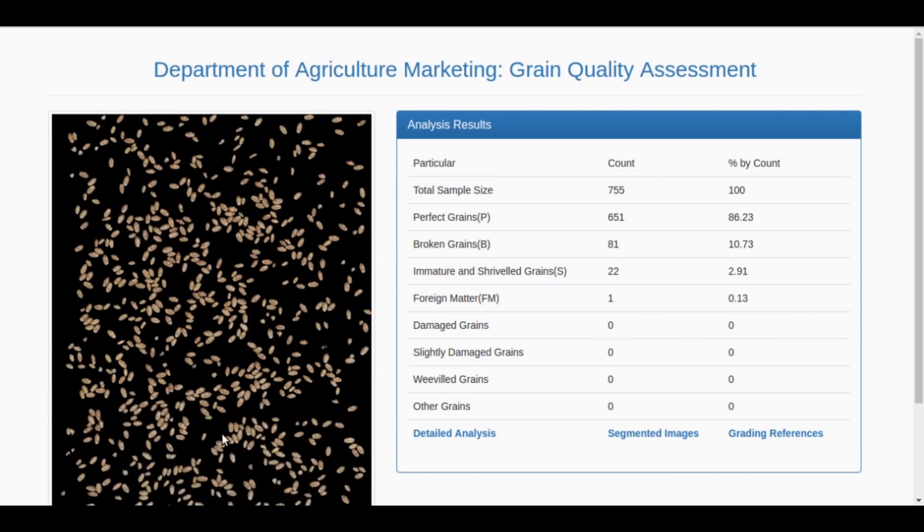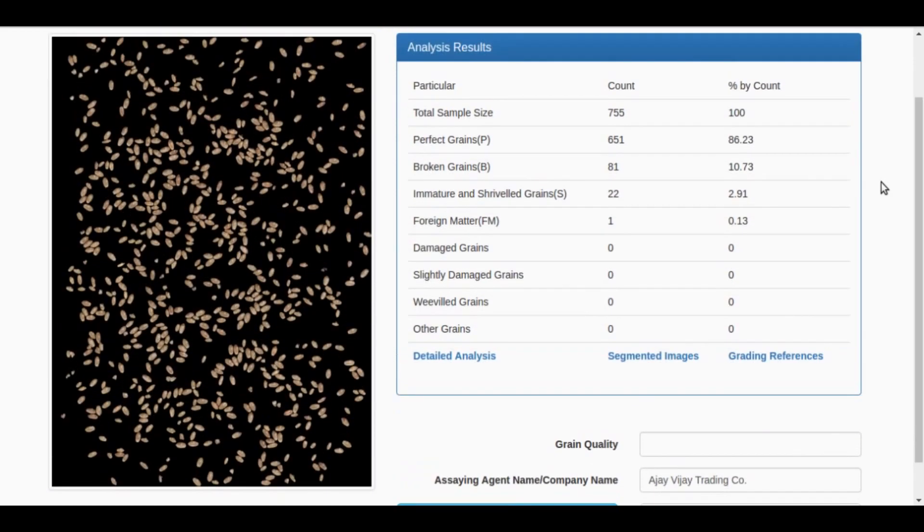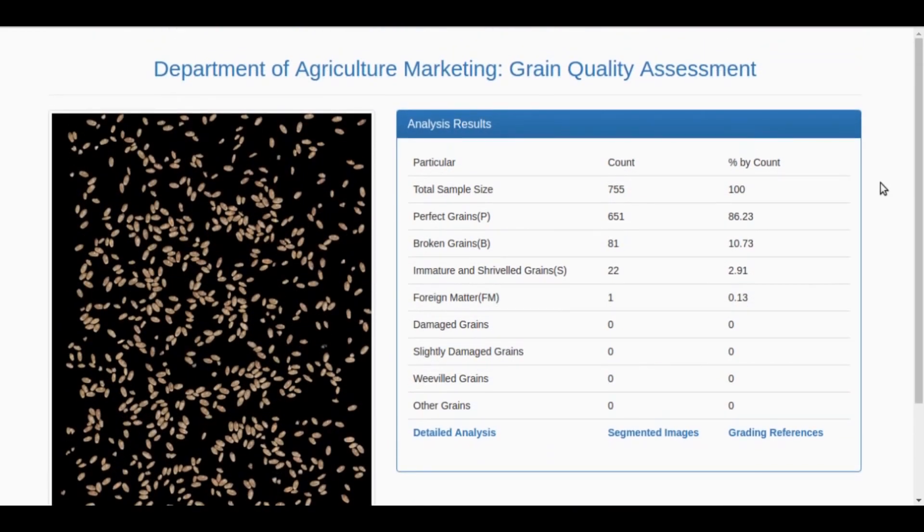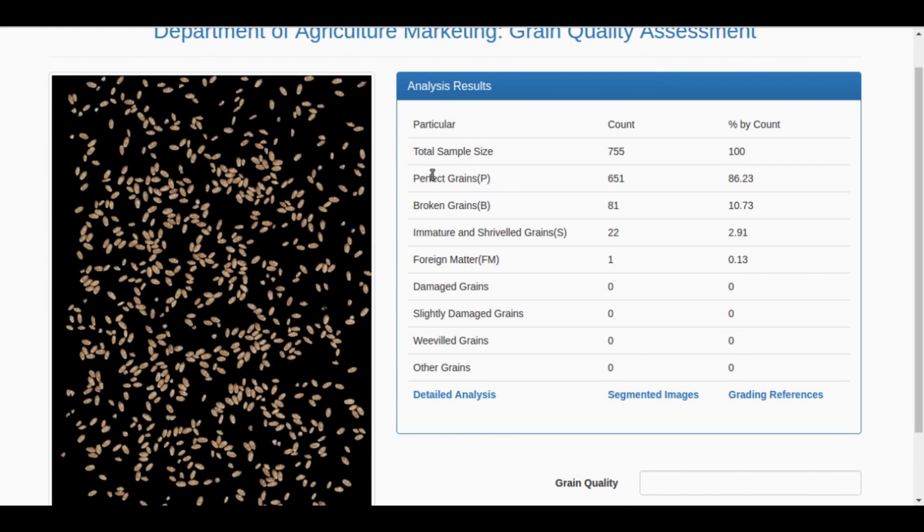Once completed, the results appear in this format. At the left side, the scan image is present with all the grains classified. The table on the right gives complete detail of classification.